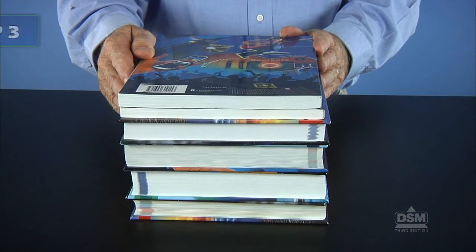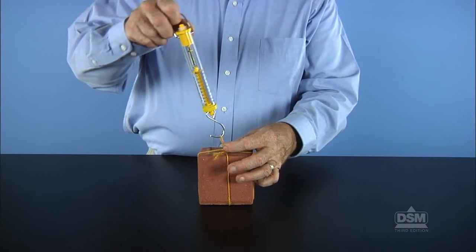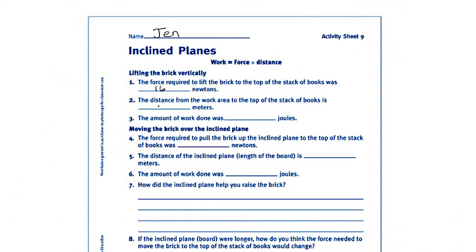Next, distribute activity sheet nine and the materials and ask the teams to stack five or six books at their work area. Instruct students to tie the string around the brick and use the spring scale to lift the brick straight up to the top of the books. Have them measure the amount of force needed to lift the brick as well as the distance traveled by the brick and record this information on their activity sheets.